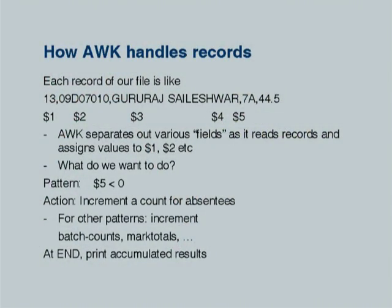Here is the AWK program. No declarations, no initialization — the program just begins. The pattern $5 < 0 triggers absent_count++. The pattern $5 >= 0 triggers: count++; tot_marks += $5; batch[$4] += $5; batch_count[$4]++. Notice that batch[$4] uses the value of $4 — the batch code string — as an index into the associative array. AWK automatically creates and initializes to zero any variable or array element when it is first used. So if a student has batch code '0A', batch['0A'] gets created and updated automatically. If an unusual code like 'ZA' appears, it too gets its own element.